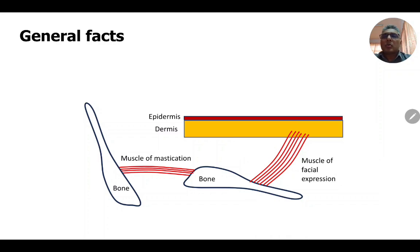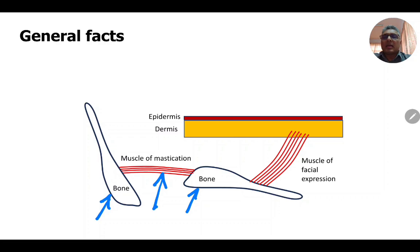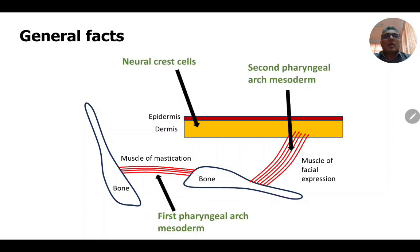Although most muscles of mastication are not in the region of the face, one muscle called masseter is on the side of the face. Muscles of mastication are attached between bones, and when they contract they move the temporomandibular joint and assist in chewing food.